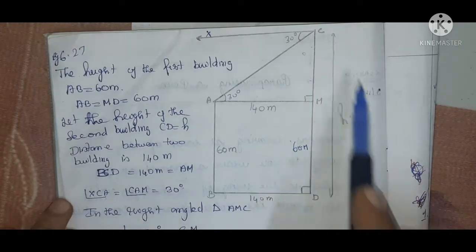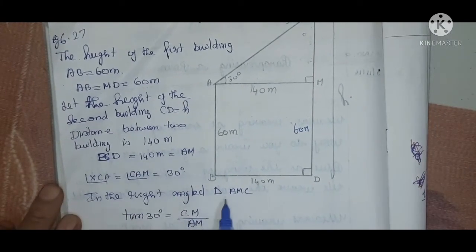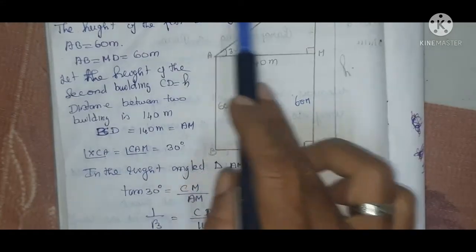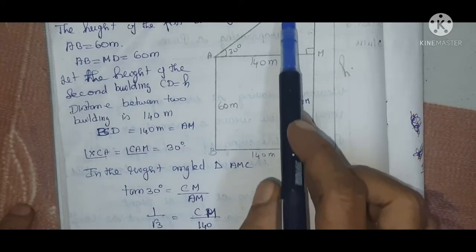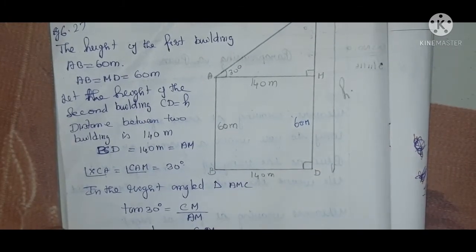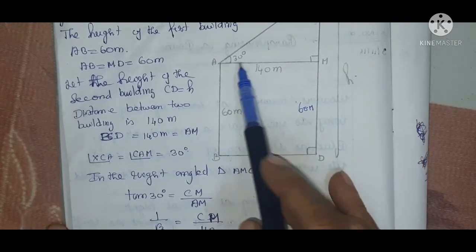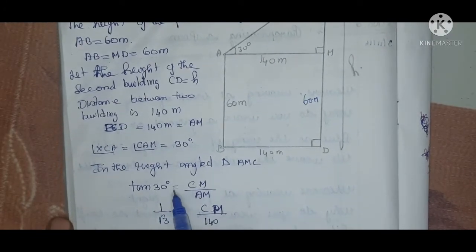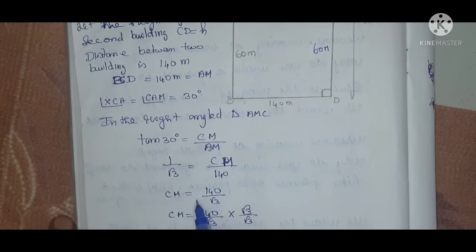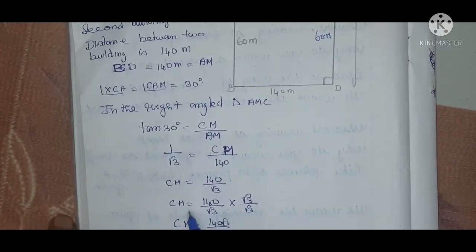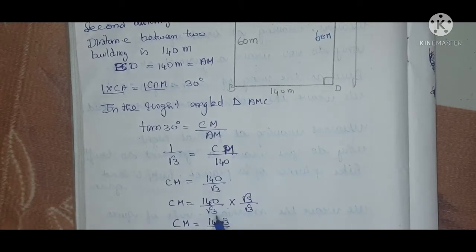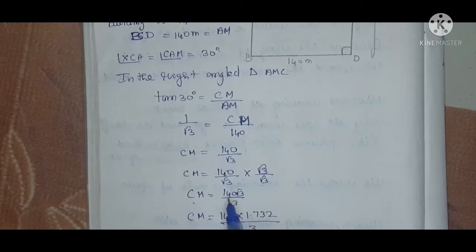Let the height of the second building CD = H. The distance BD = 140 meters = AM. Angle XCA = angle CAM = 30°. In right-angle triangle CAM, tan 30° = opposite CM divided by adjacent AM. Tan 30° = 1/√3 = CM / 140. So CM = 140/√3. Rationalizing: CM = 140√3 / 3. Substituting √3 = 1.732: CM = 140 × 1.732 / 3 = 46.67 × 1.732 ≈ 80.83 meters.